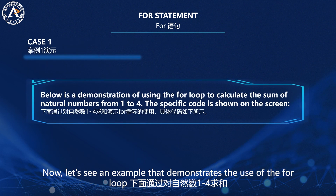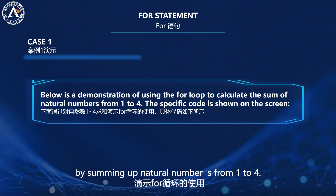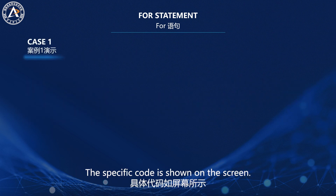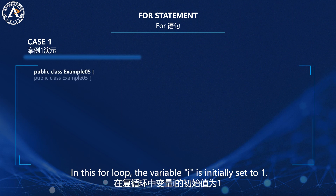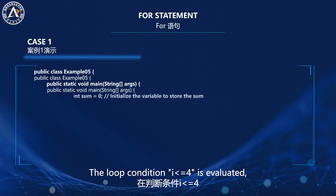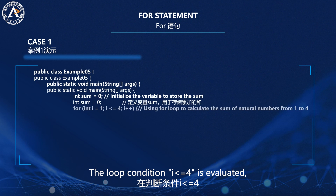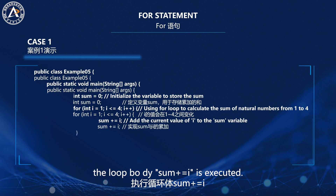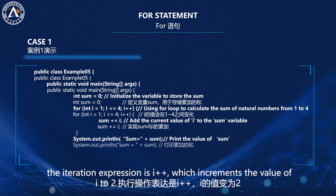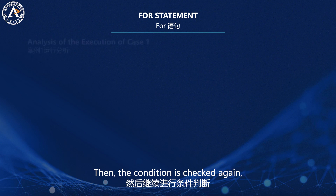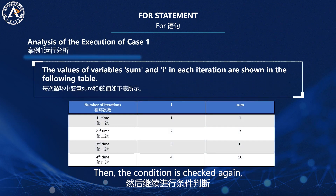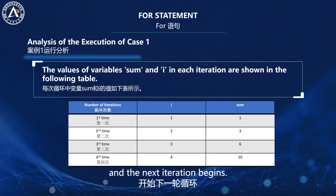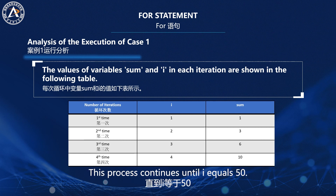Now let's see an example that demonstrates the use of the for loop by summing up natural numbers from one to four. The specific code is shown on the screen. In this for loop, the variable i is initially set to one. The loop condition i <= 4 is evaluated, and if it's true, the loop body sum += i is executed. After the execution, the iteration expression is i++, which increments the value of i to two. Then the condition is checked again and the next iteration begins.